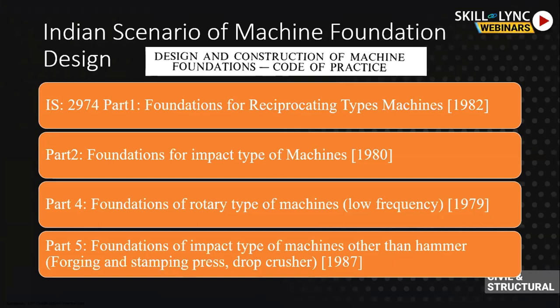For offshore wind turbines, there is no specific Indian code. The importance of the pipeline network must also be considered — in oil refinery foundations, pipelines are also important and need to be addressed simultaneously. Current Indian standards focus only on very basic rotating mass and reciprocating mass machines — common old machines for simple industrial structures. For oil refineries, offshore applications, and nuclear power plants, those foundation designs are not well standardized yet in the Indian scenario.